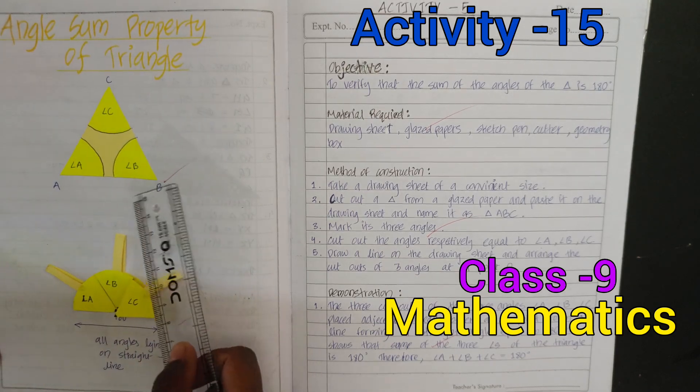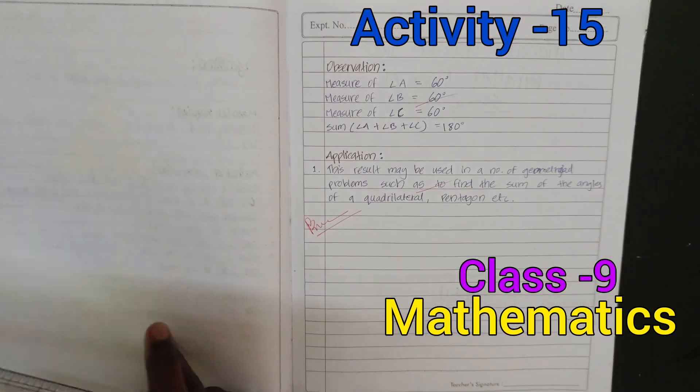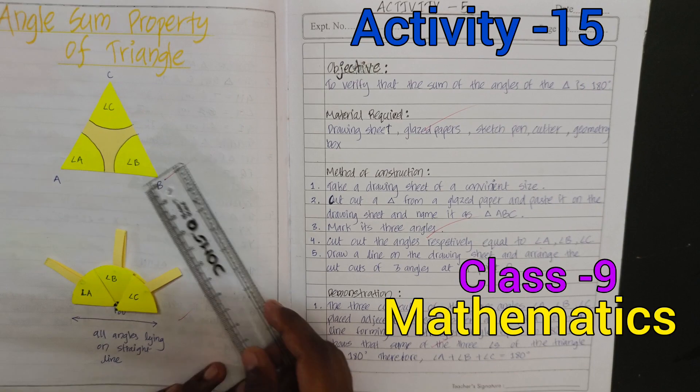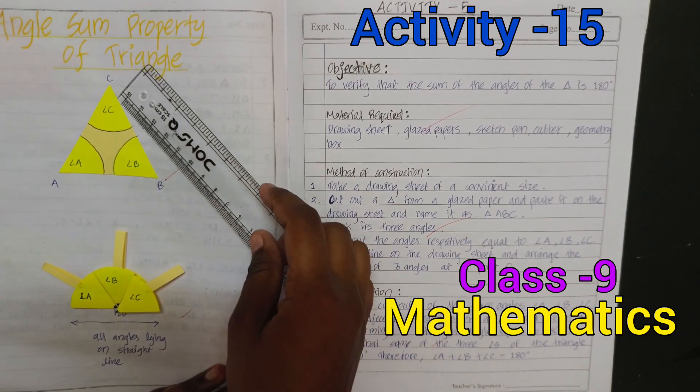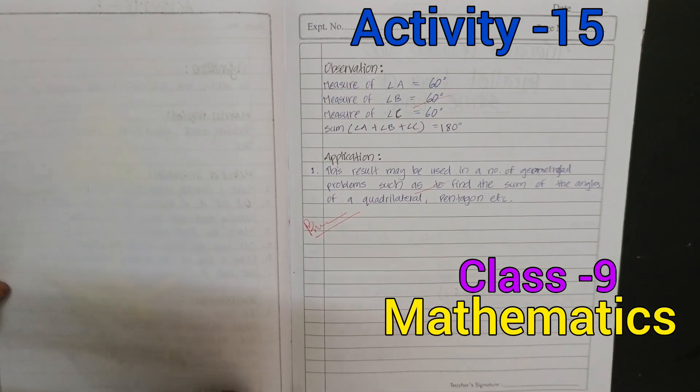The actual observation: we observe that measure of angle A is 60 degrees, B is also 60 degrees, and C is also 60 degrees. It's an equilateral triangle, so the sum of angle A, B, and C is equal to 180 degrees.